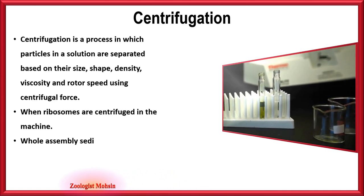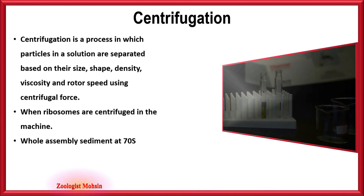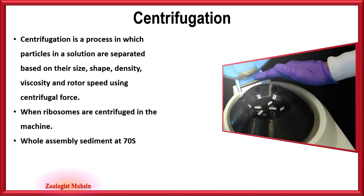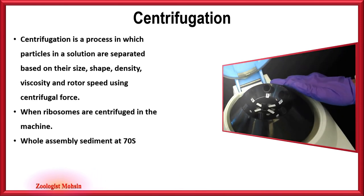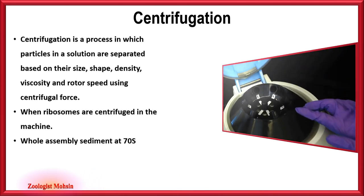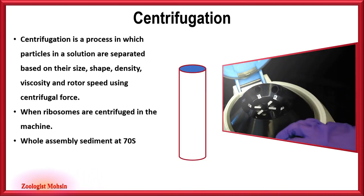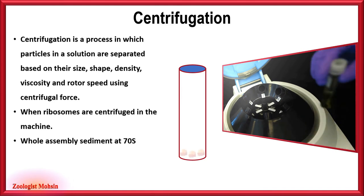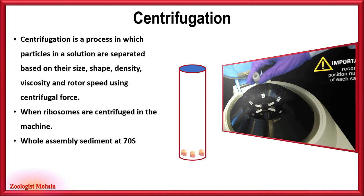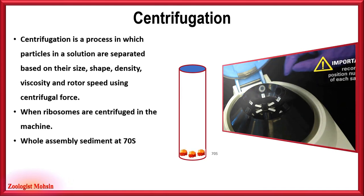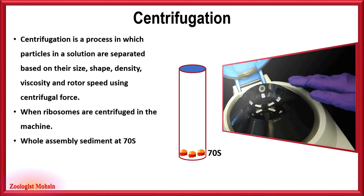When whole ribosomes are centrifuged, they settle down as 70S (Svedbergs), near the bottom of the tube.